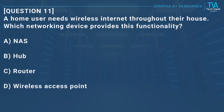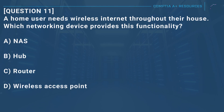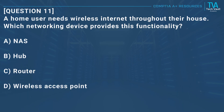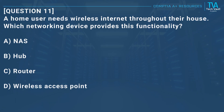Question 11: A home user needs wireless internet throughout their house. Which networking device provides this functionality? A, NAS. B, hub. C, router. D, wireless access point.